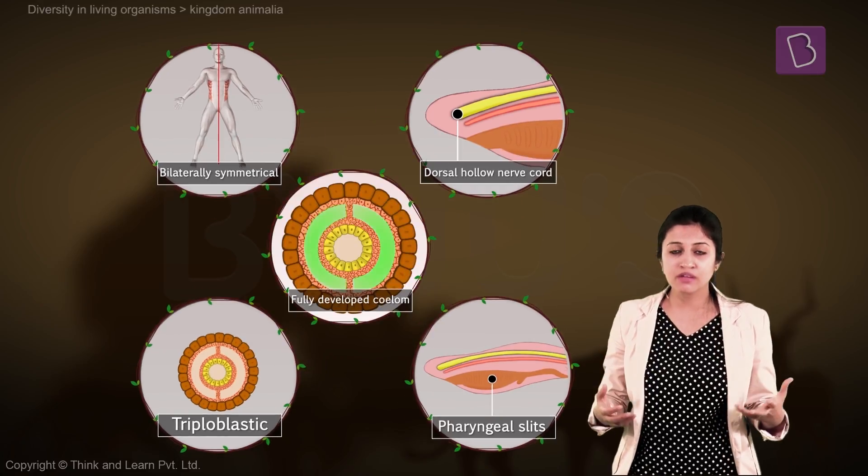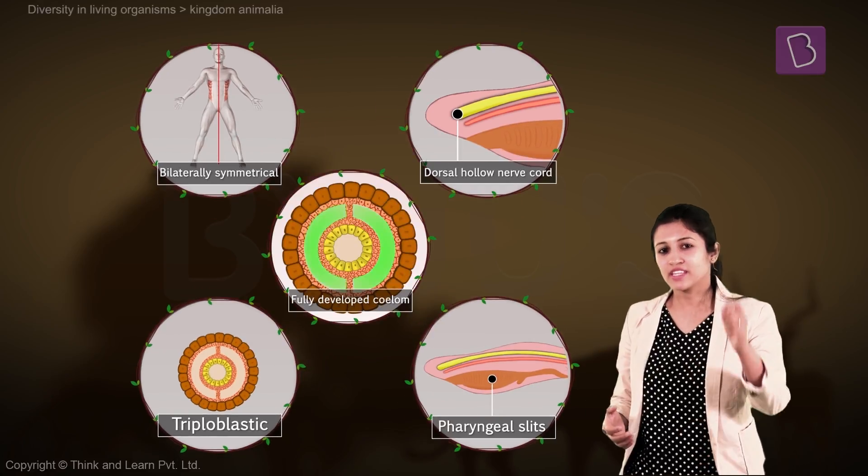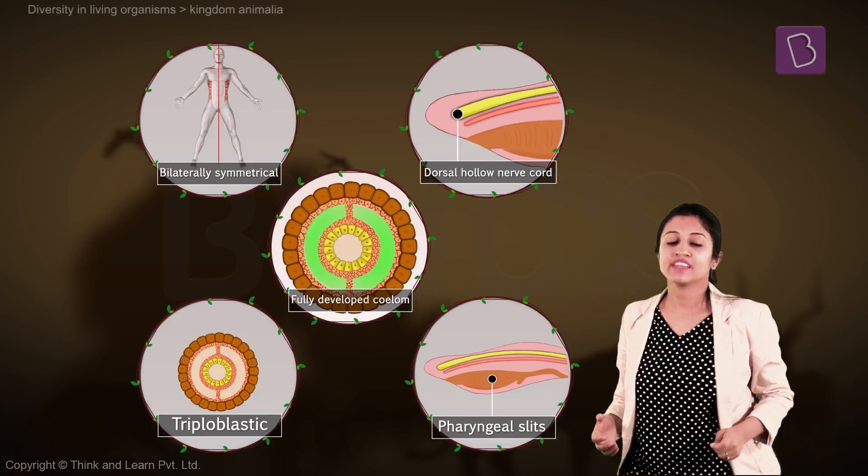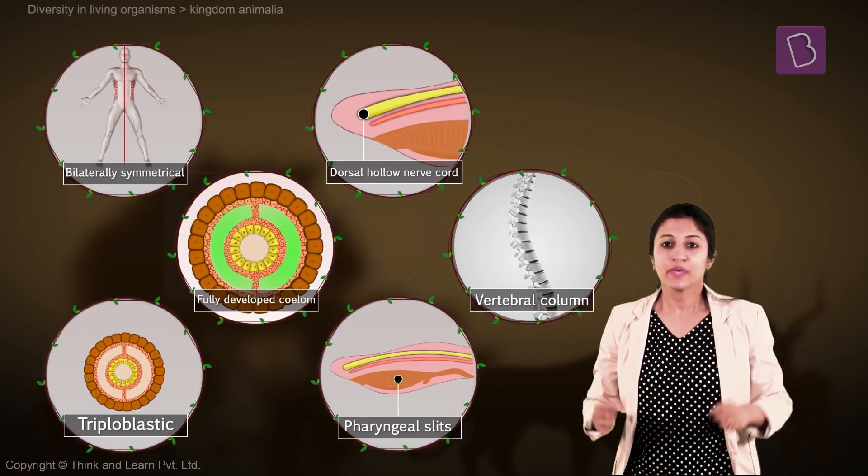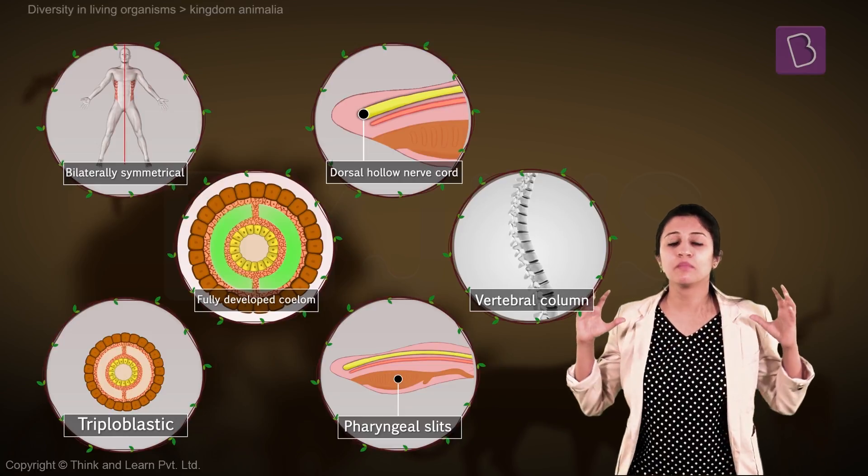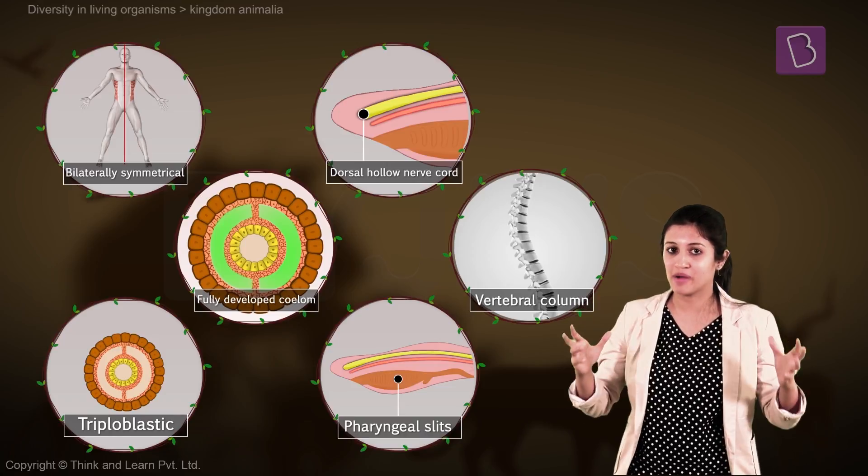They also have a fully developed coelom and most importantly the thing that makes us put them in a separate phylum, they have a vertebral column, which is basically a hard backbone that allows so many types of species to come along.